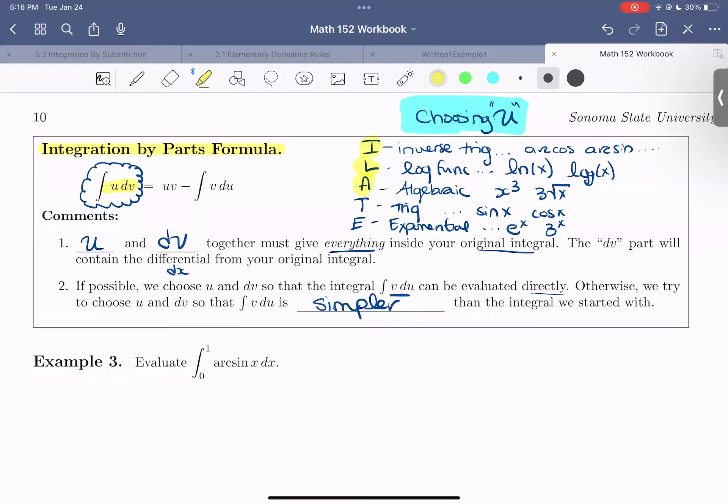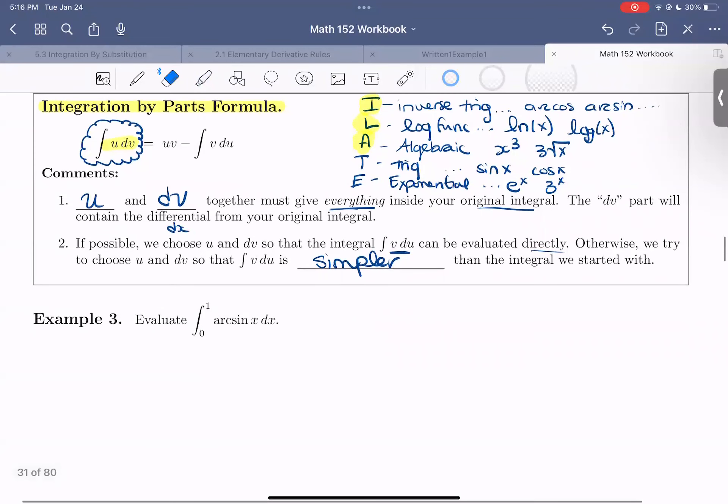So let's look at our final example in this section, example three. So we're looking at the integral from 0 to 1 of arc sine of x. Okay. So right away, we don't have a formula for this integral. And so we can try to use integration by parts.